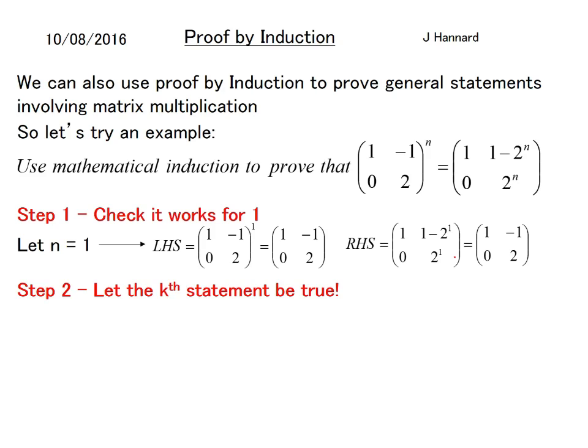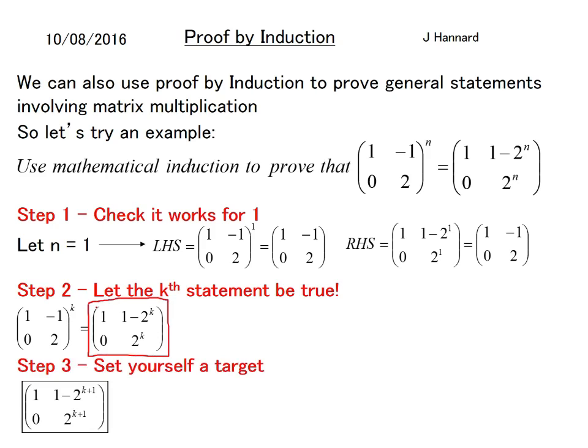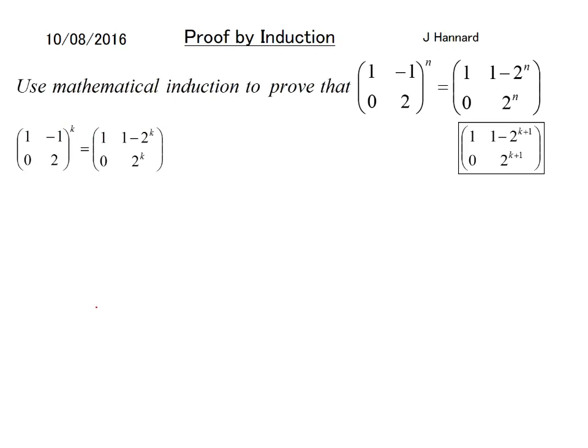Let the kth statement be true, so we'll replace anywhere we see an n with a k. So this is now our kth statement. So step 3, set yourself a target. Well that's just going to be the kth statement with k plus 1's in there. And we'll stick there in a box on the right hand side.